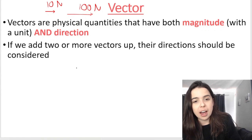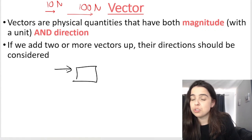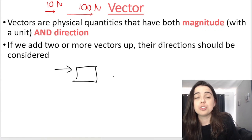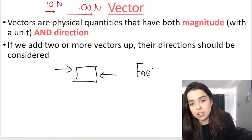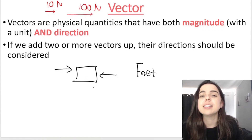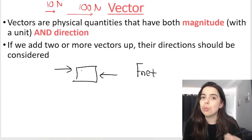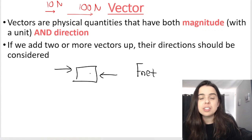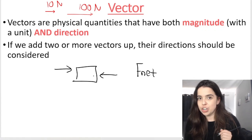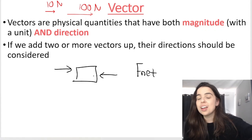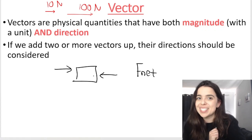For example, if you have a box and someone is pushing that box to the right with a certain force and someone is pushing the box to the left with a certain force, and we want to work out the net force, the direction of these vectors need to be considered. One person is pushing in what we will call the positive direction, the other in the negative direction. Those positive and negative directions need to be considered when working out the net vector, the resultant vector, the overall vector.